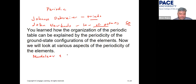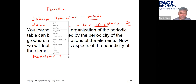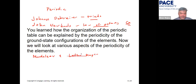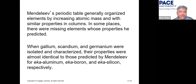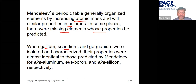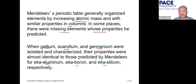Mendeleev and German scientist Lothar Meyer independently arranged the periodic table by properties. Mendeleev's advantage was that he organized elements by increasing atomic mass with similar properties in columns, and where elements were missing he predicted their properties — naming them eka-aluminum, eka-boron, and eka-silicon, later discovered as gallium, scandium, and germanium.